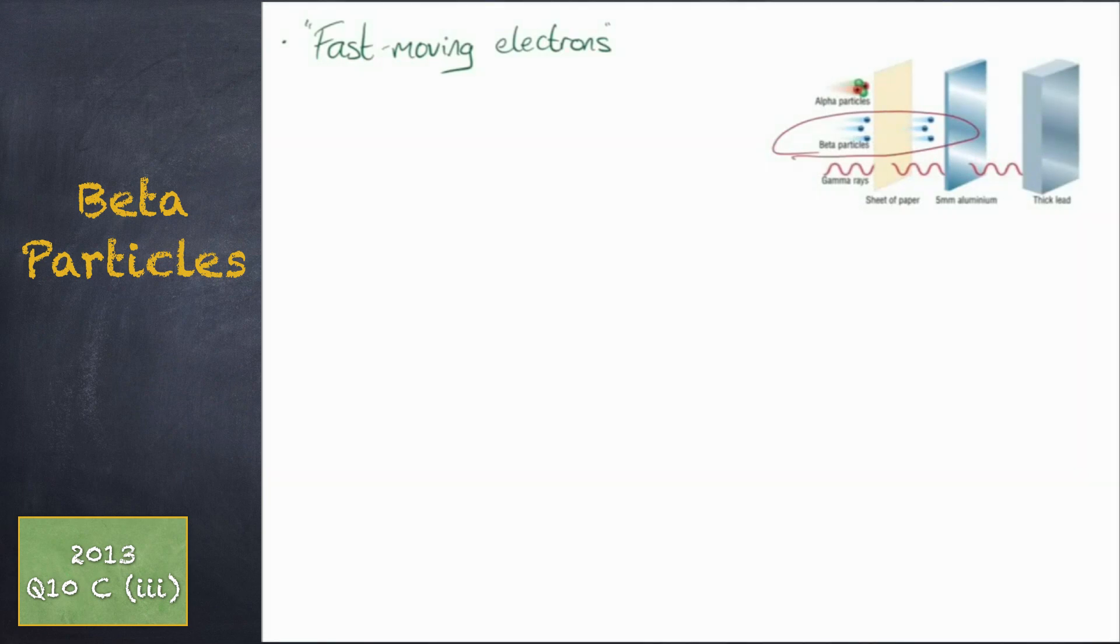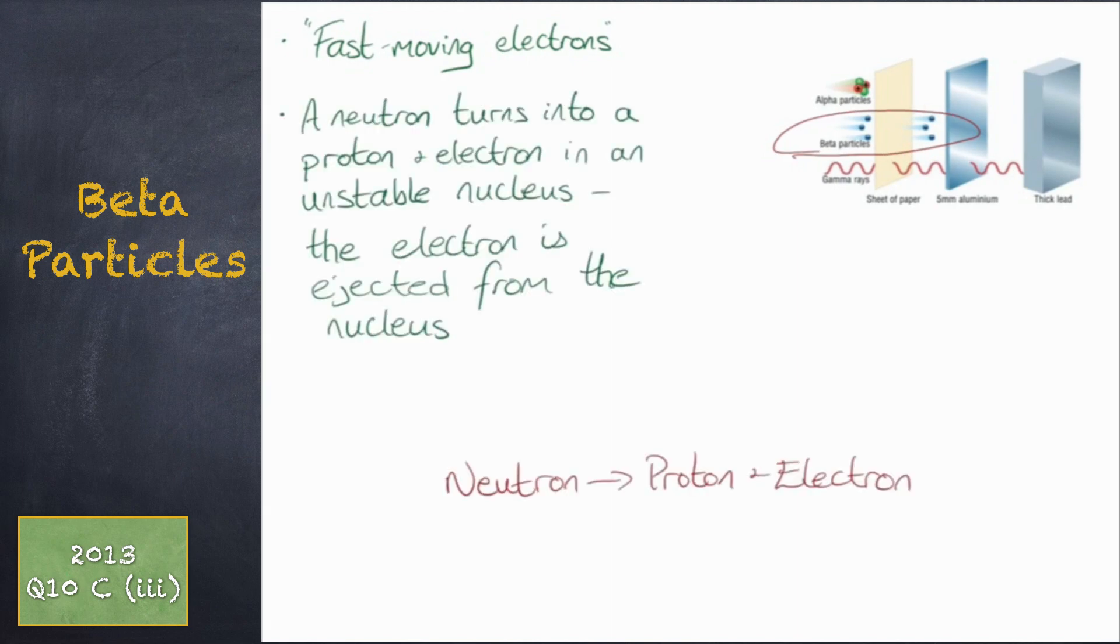Beta particles are essentially fast moving electrons. A neutron in an unstable nucleus changes into a proton and electron. You do not need to know how this occurs. The electron is fired out of the nucleus.